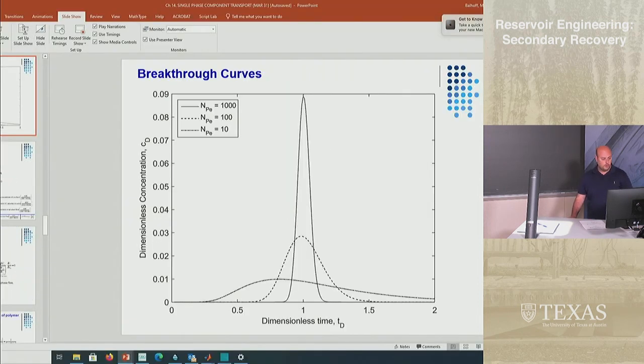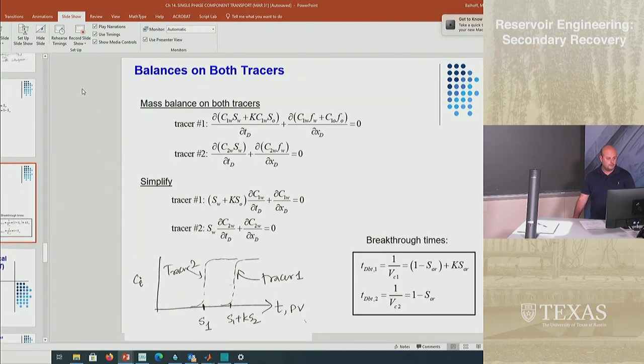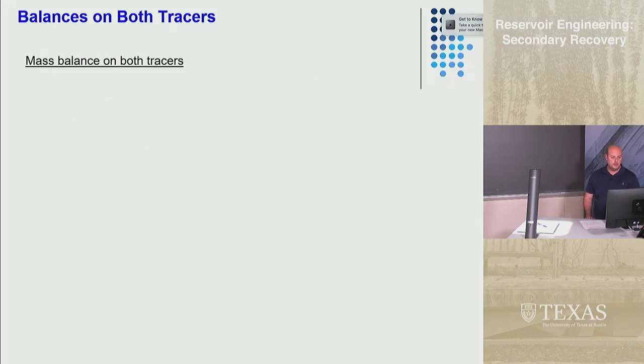If I simplify that for our case, I get this. I know that there's no adsorption, there's no tracer that adsorbs onto the rock, so the equation for the first tracer looks like this. I've written it like this because tracer one goes into both the water and the oil phase. You've got this partition coefficient k here. This is the second equation which is only miscible in the aqueous phase so there is no SO. Another way to think about it is the partition coefficient is zero.